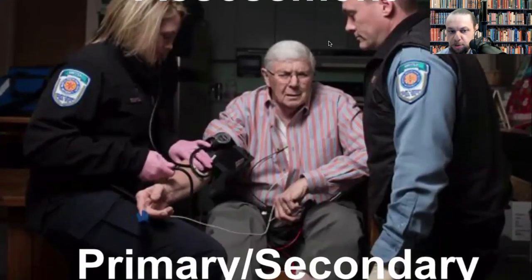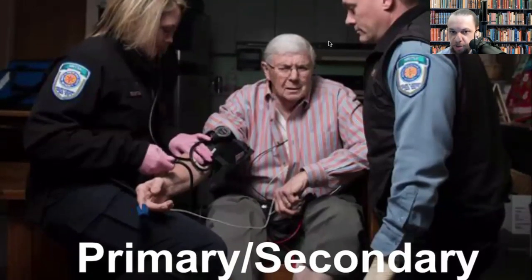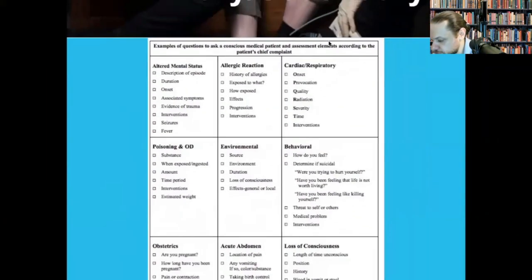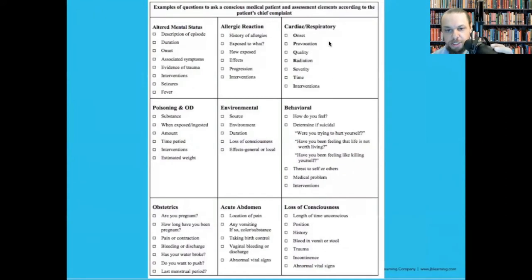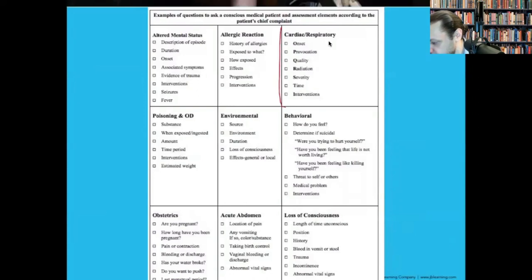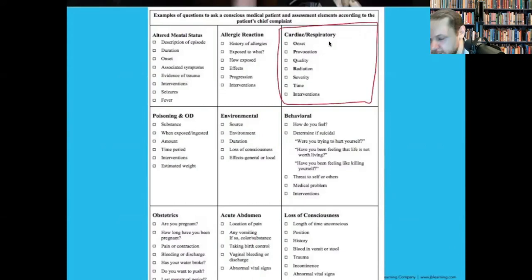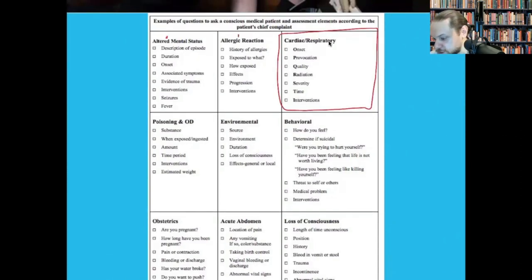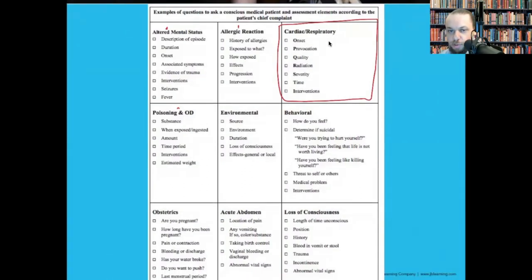Now let's talk about patient assessment. We'll do a primary and secondary assessment — specifically a medical patient assessment for patients having a myocardial infarction. The OPQRST questions are only pertinent for cardiac and respiratory conditions. For other conditions like altered mental status, allergic reactions, or poisoning, different questions apply. OPQRST is specifically pertinent to myocardial and respiratory conditions.